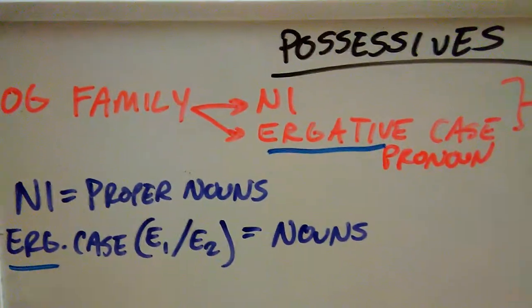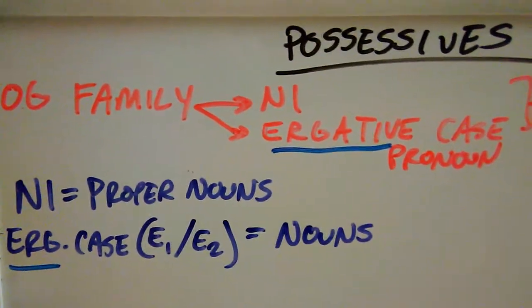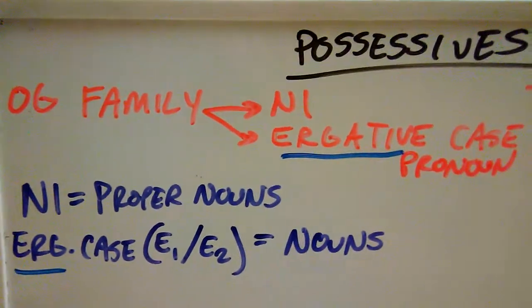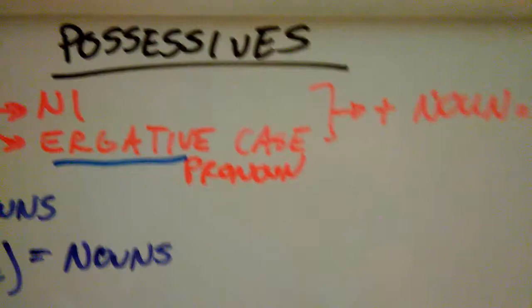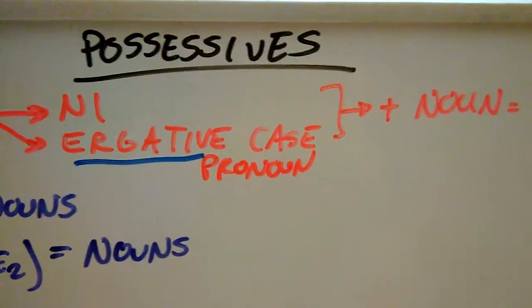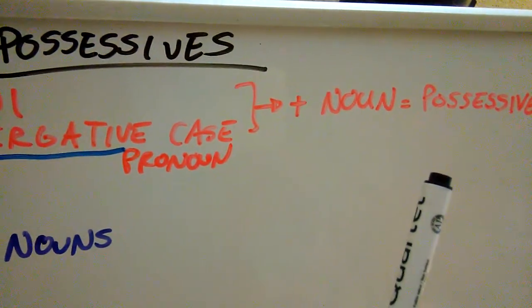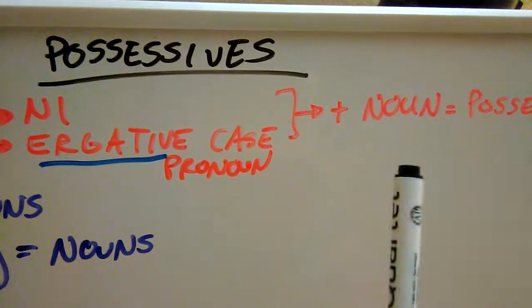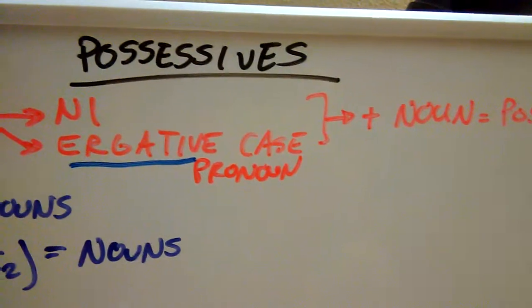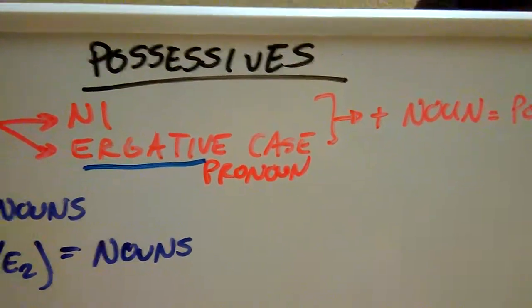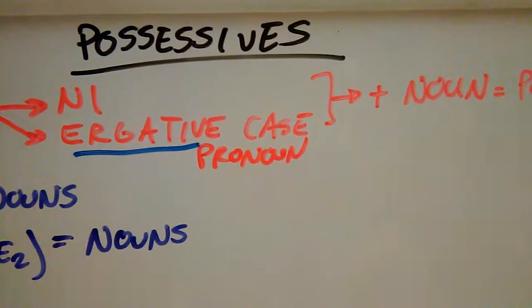How do we form the possessive in Cebuano? If you look back at the other videos that talked about the OG family and ergative case pronouns, you see a pattern: you need to use the ergative case pronoun — things that are part of the OG family — to express possession. Specifically, we're talking about the ergative case pronouns plus a noun. It makes sense because if it's a noun, someone is going to take ownership of that noun, and that's how we get the possessive form. However, if it were a verb, it's going to show non-focus of the ergative case pronoun. So be careful: if you use the OG family markers with a verb, it marks something that's not a focus. But if you use it with a noun, it's going to show possession — just keep that rule in mind.